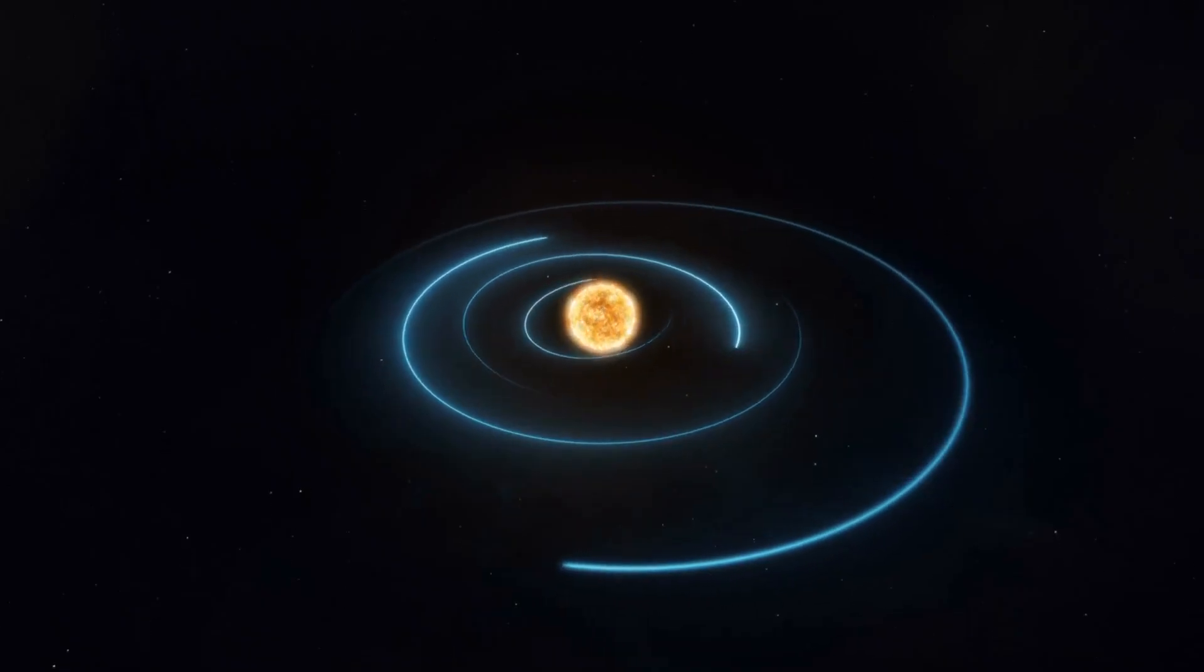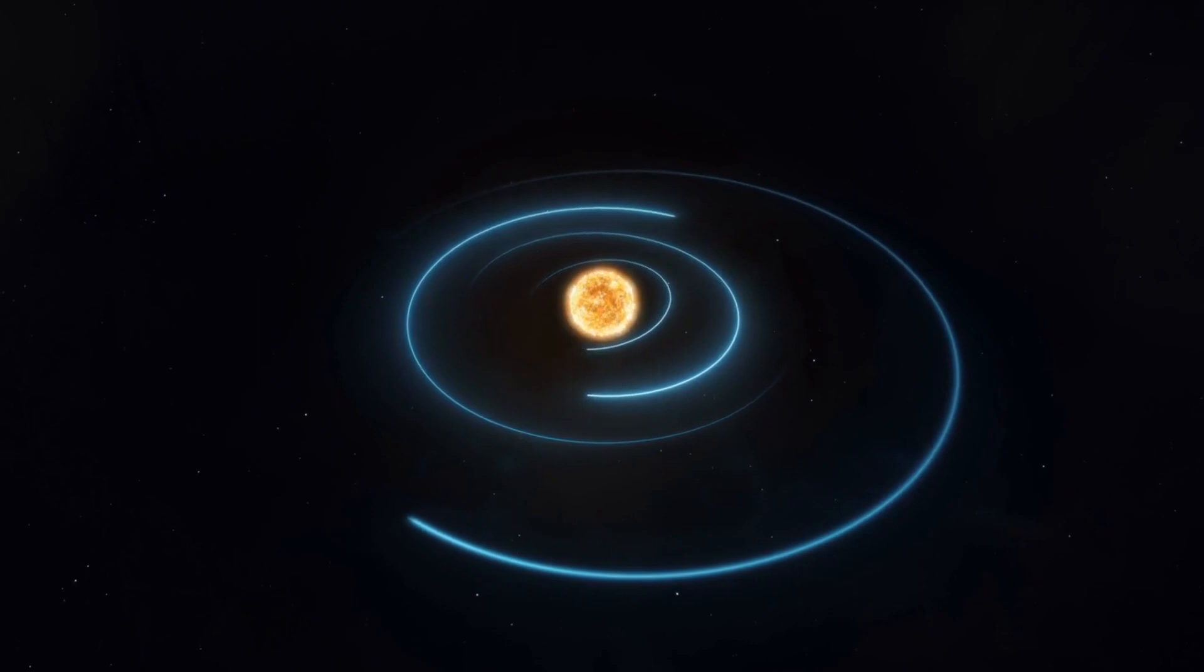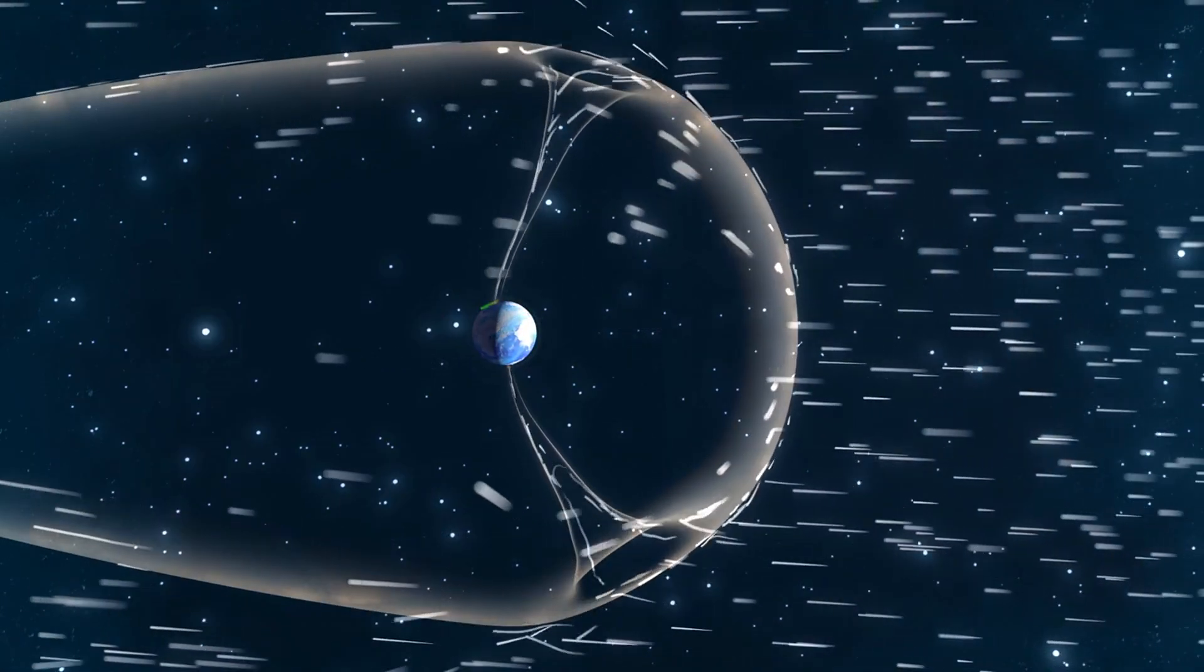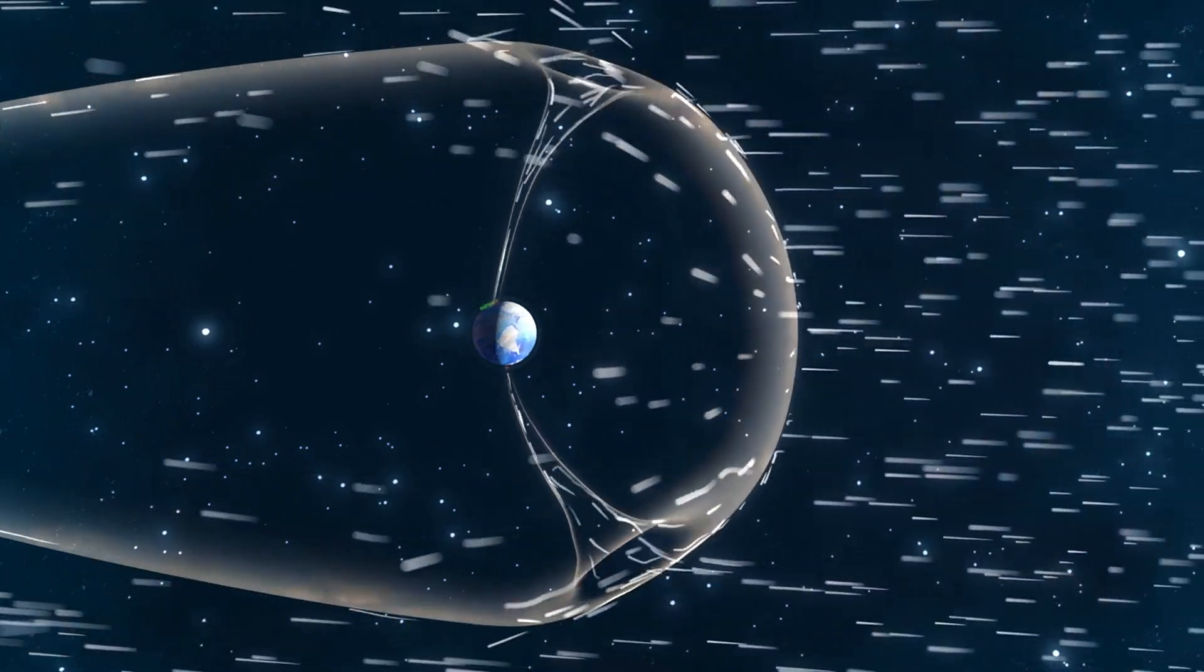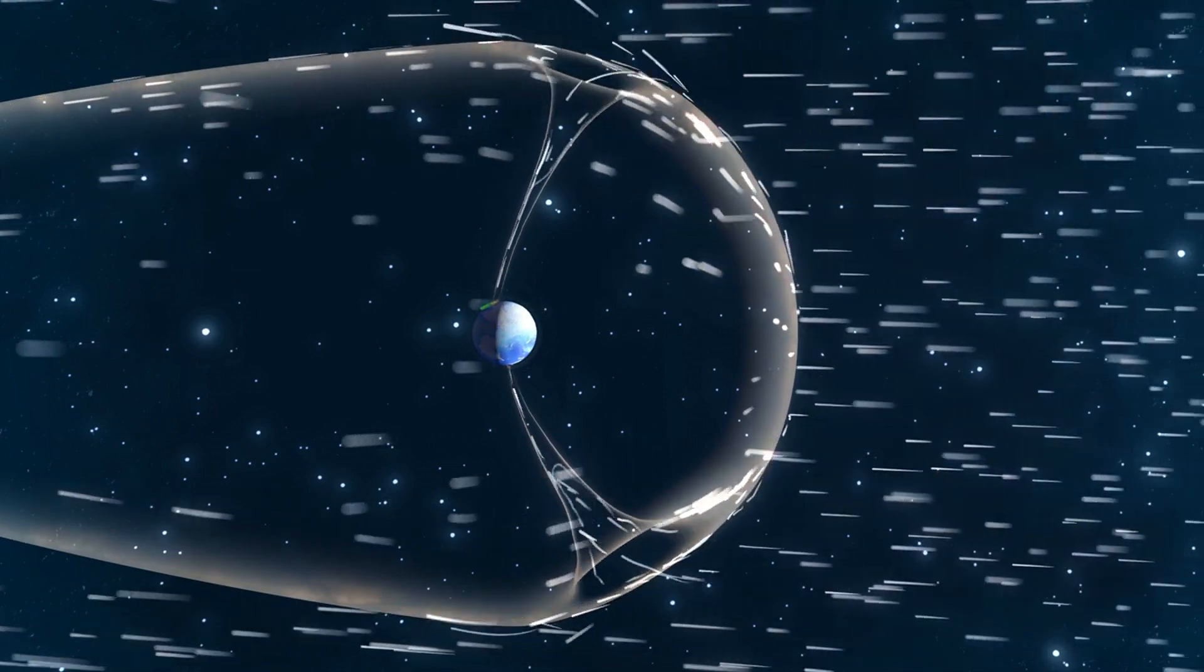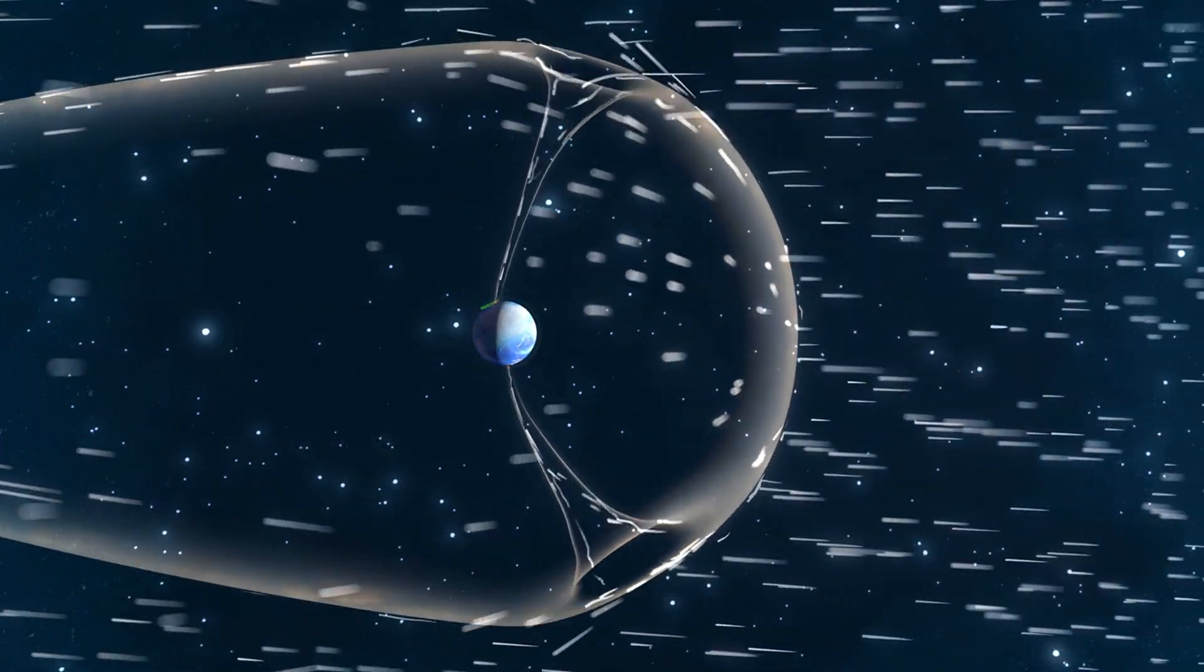Solar wind parameters have been relatively calm, hovering near background levels. The BZ component of the magnetic field has seen prolonged periods of sustained southward direction, with a mostly stable total magnetic field strength between 4 to 6 nt.